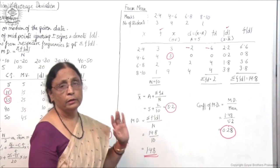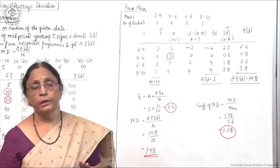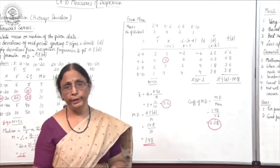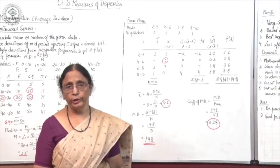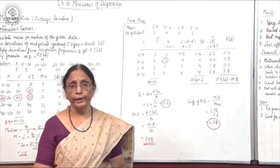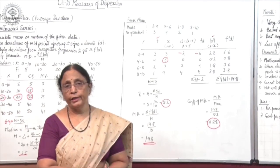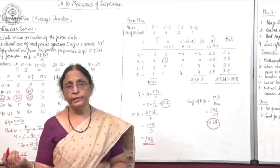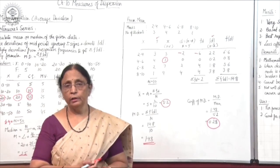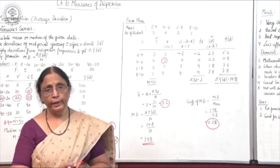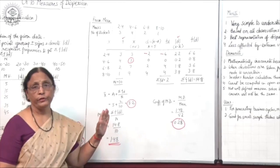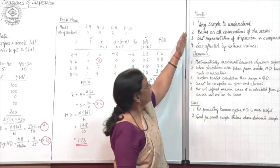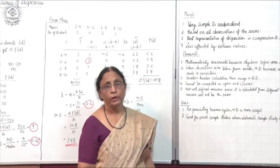So in continuous series, we can calculate MD through mean or through median — that is your choice or depends on your data. If data is simple, calculate through mean. If data is complicated and a long process, then median may be easier. Now after completing all three types of series, we will see the merits and demerits of mean deviation.